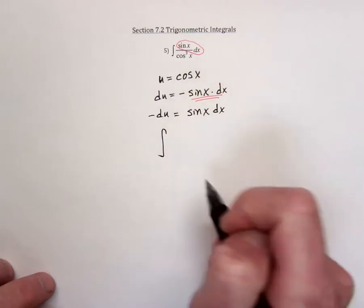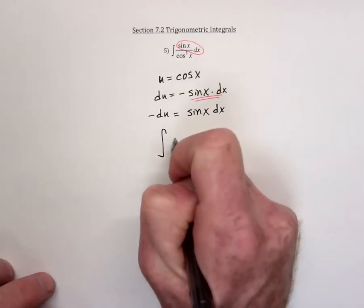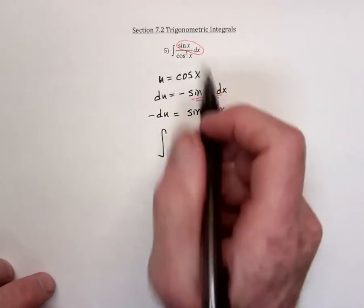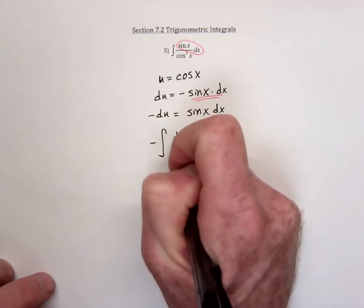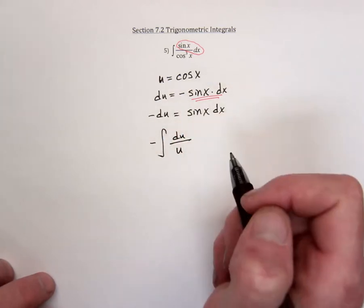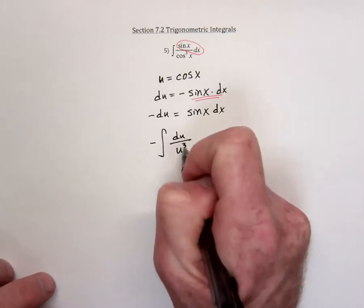So it's going to be integrate, the top is going to be negative du, but the negative I'll just factor out, and the bottom is cosine cubed, so that's u cubed.